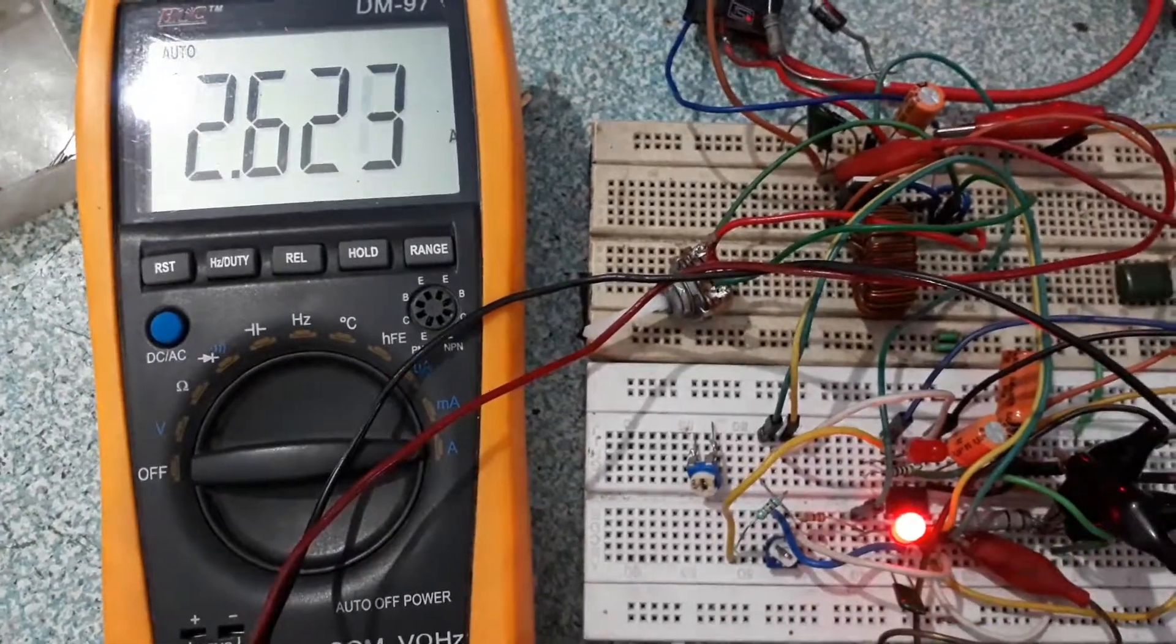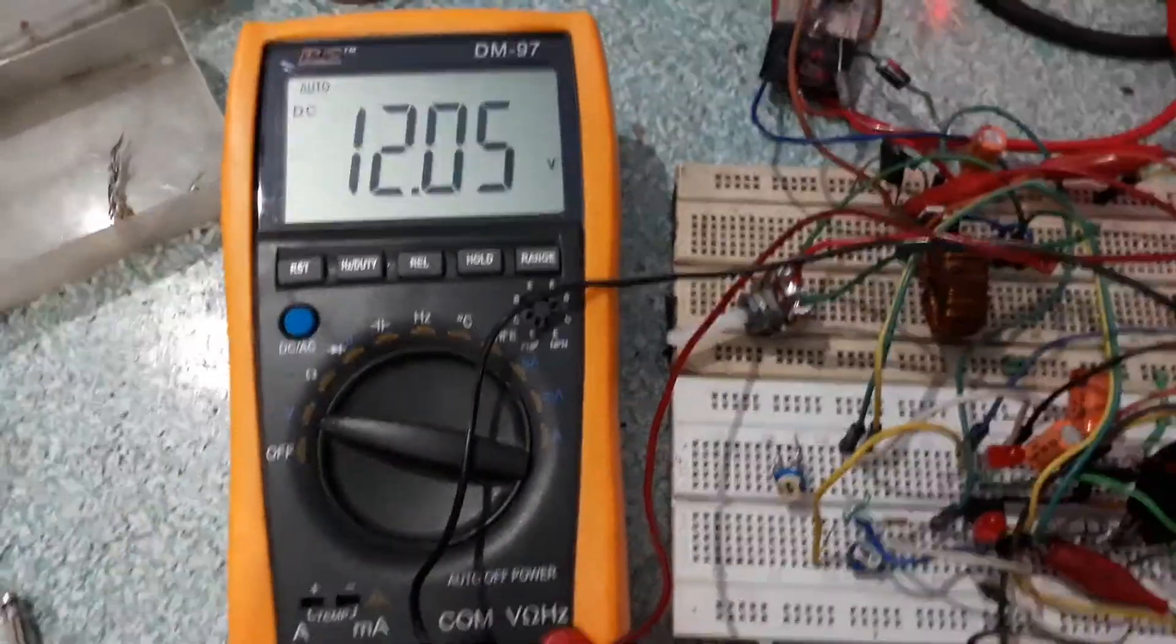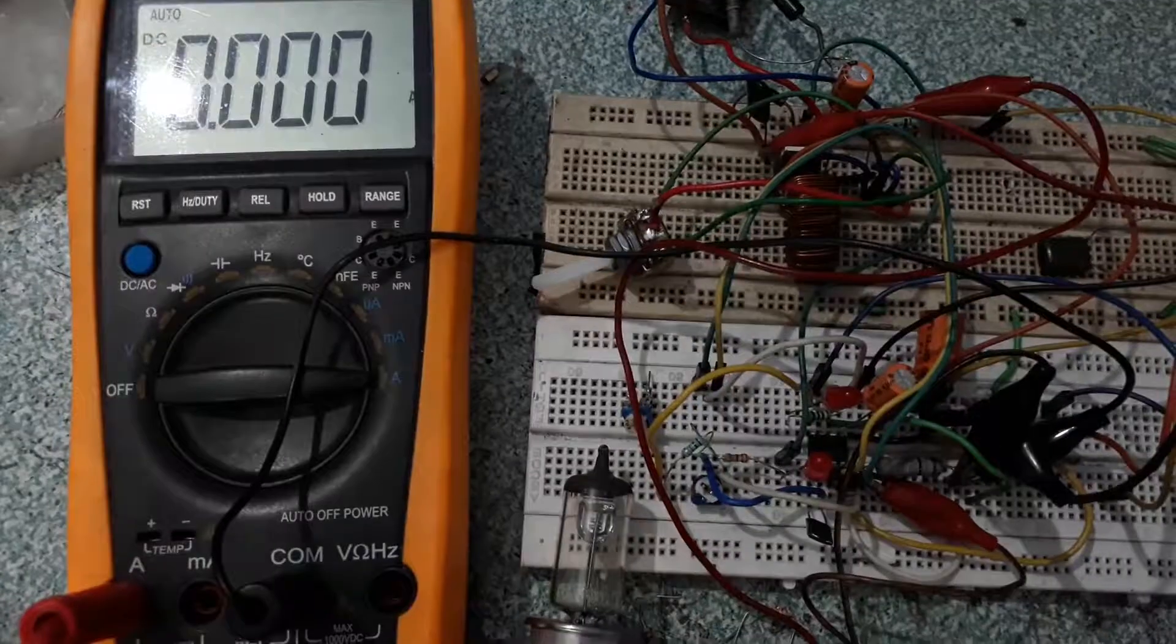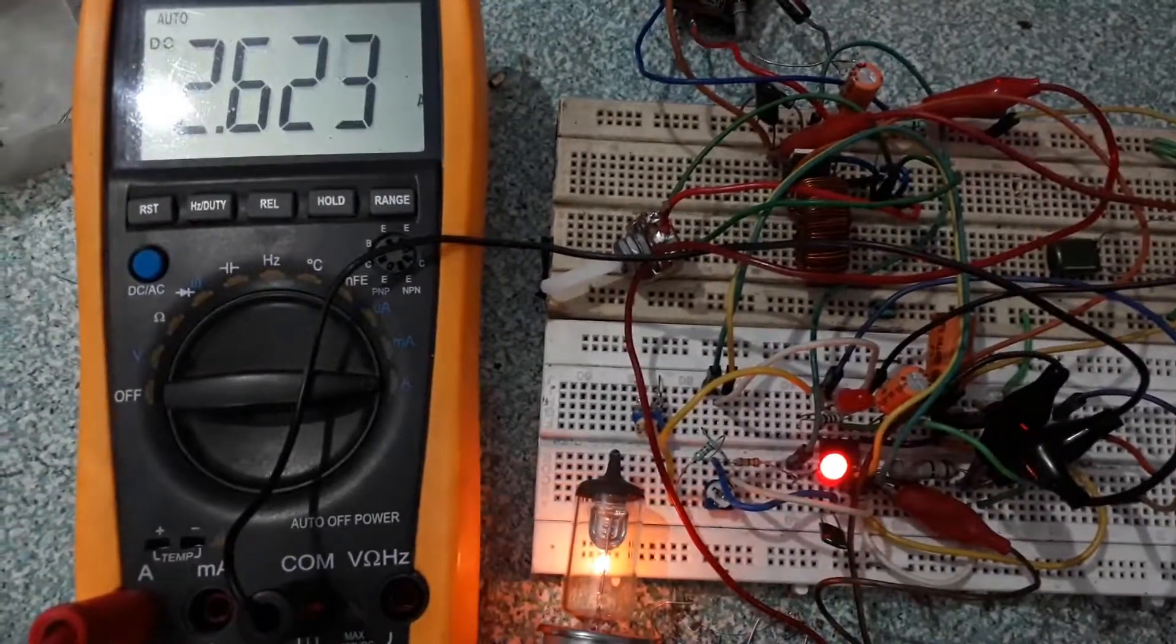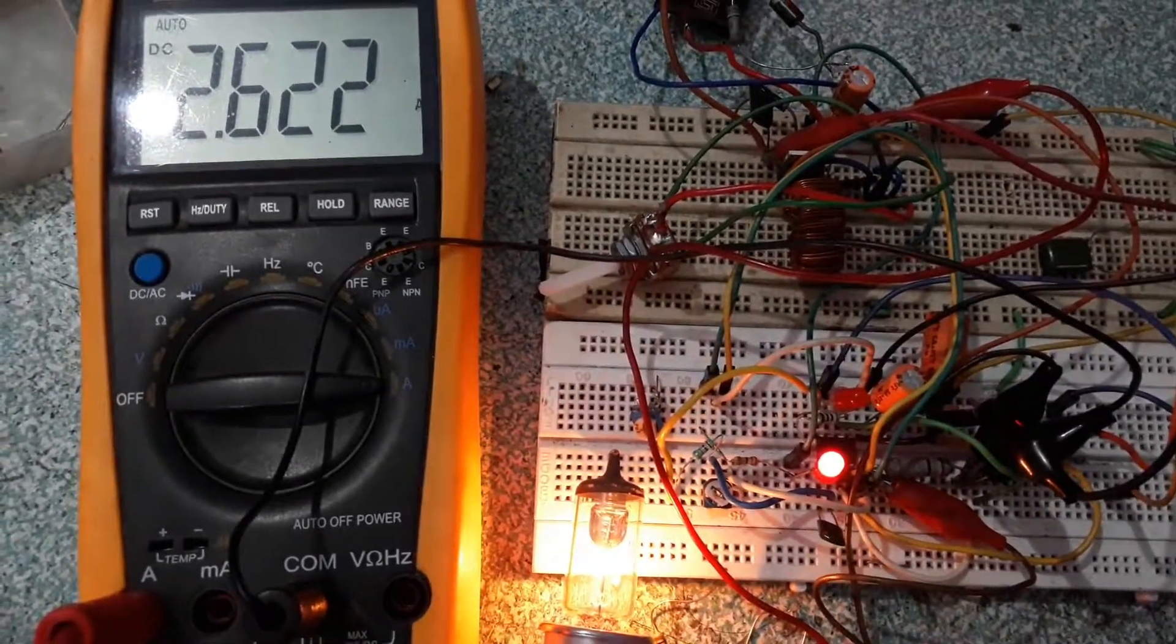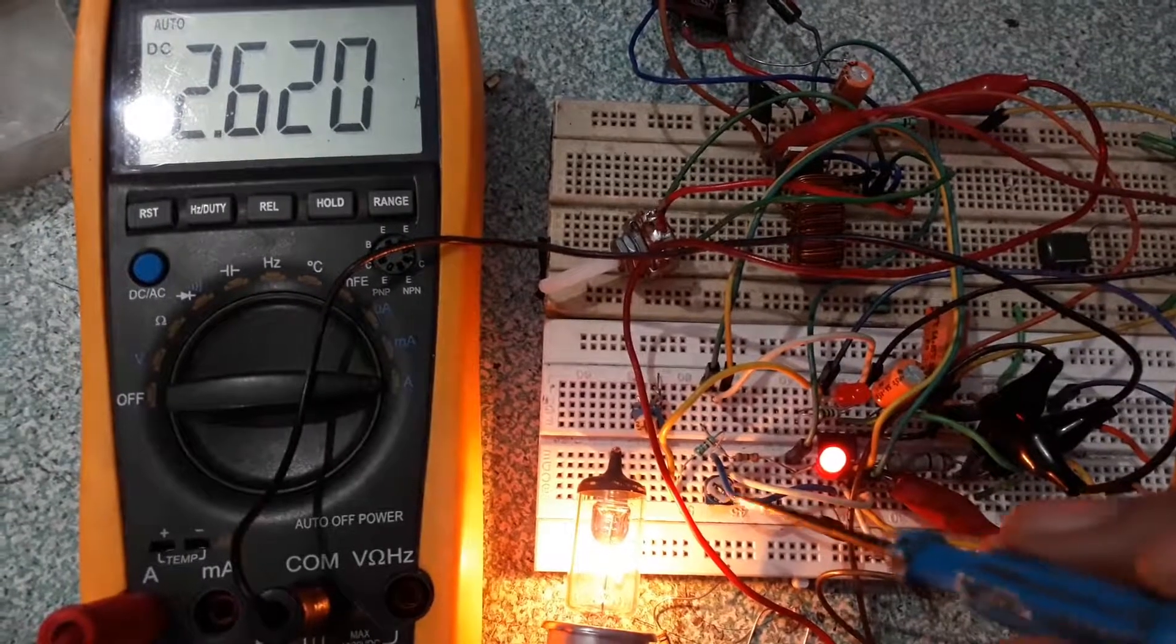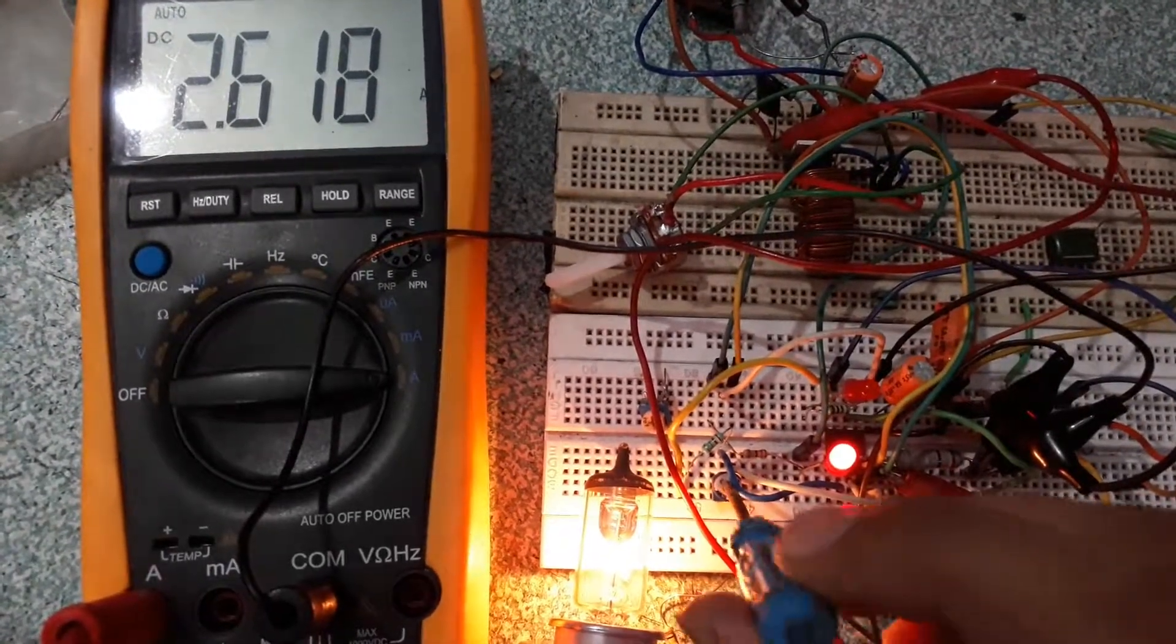Now I'm going to set the current to 2.6A and voltage to 12V. Now turning the power supply on, and as you can see it is consuming 2.6A and the current limiting is on, which means that current limiting is working.